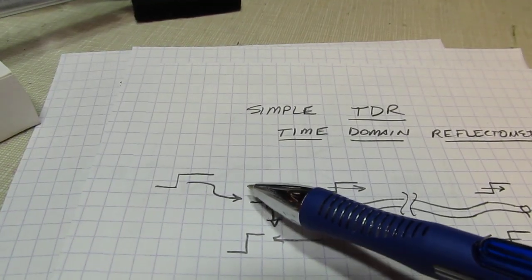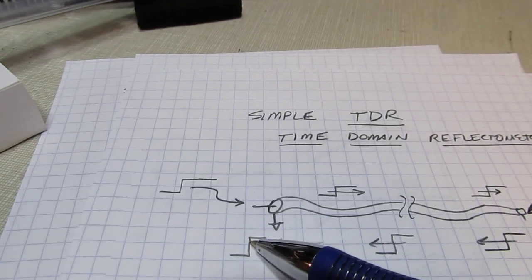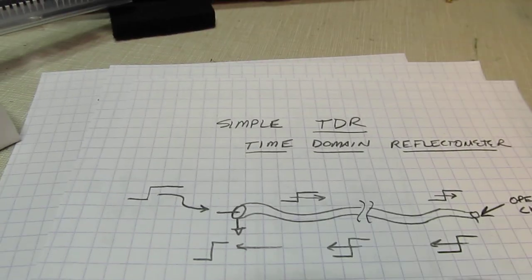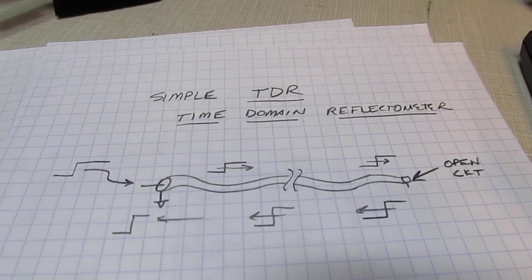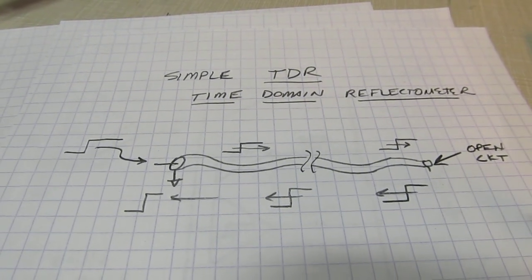If you put a scope here, you can measure the time difference between when the signal entered and when the reflection comes back. That time difference equals two times the propagation delay. That's how you could determine the length of the coax. I'll put a link to that video in the notes.